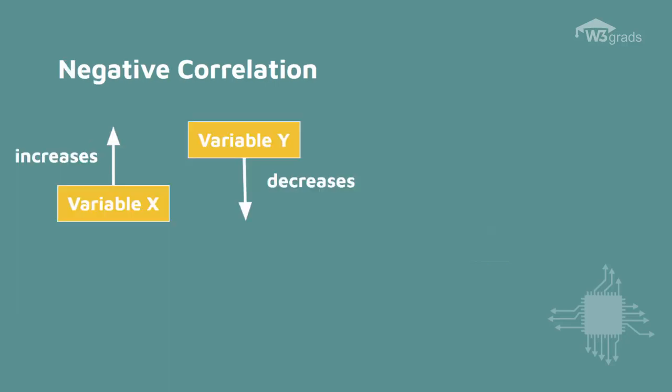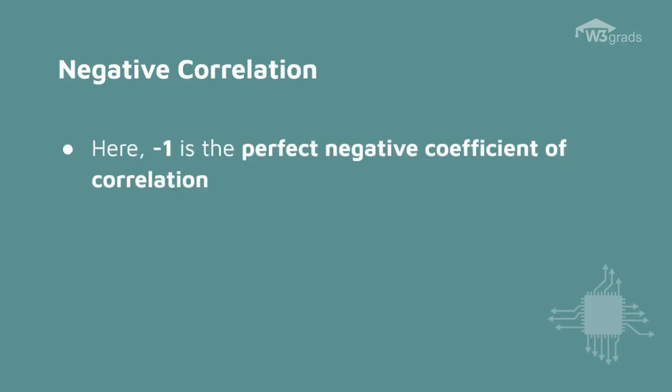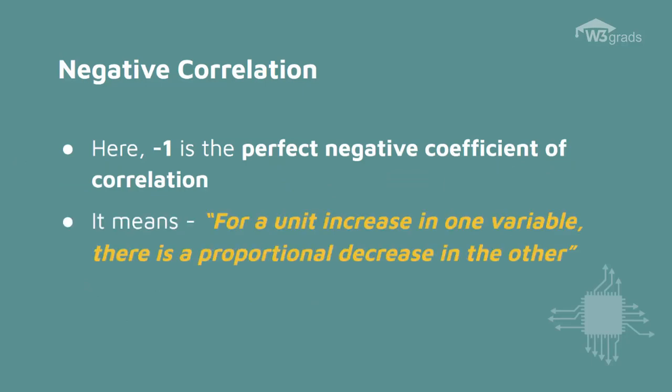Now, if the increase in one variable X results in a corresponding decrease in the other variable Y, the correlation is said to be negative correlation. The negative correlation ranges from minus 1 to 0. Here, the lower limit, which is minus 1, gives the perfect negative correlation.